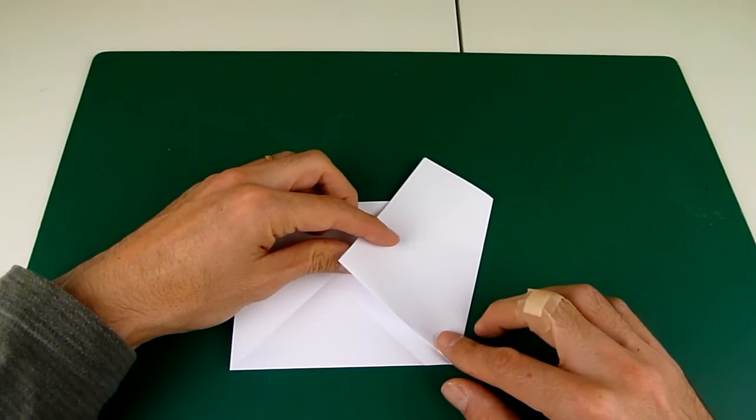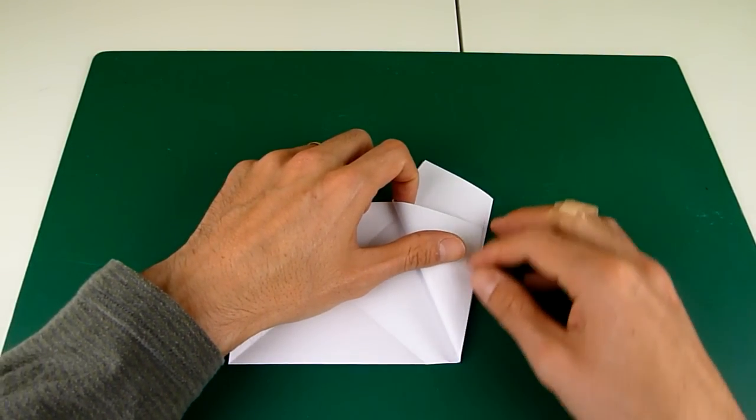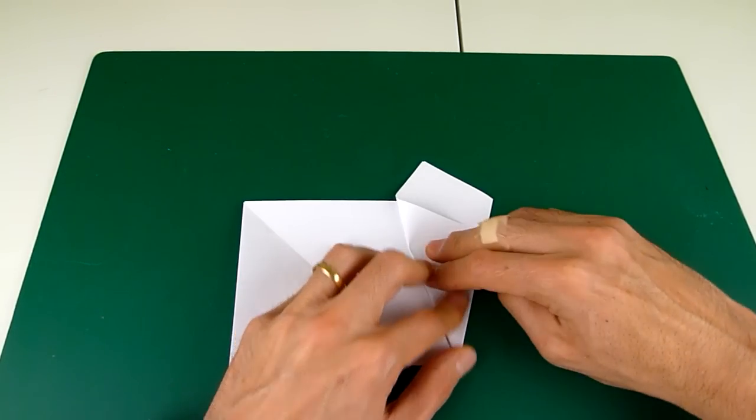Now you want to take that same corner, and you want to fold this edge to meet this edge. So we're going to fold that across to the right, like so.